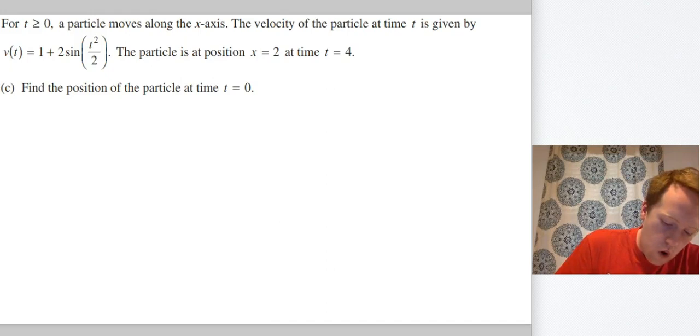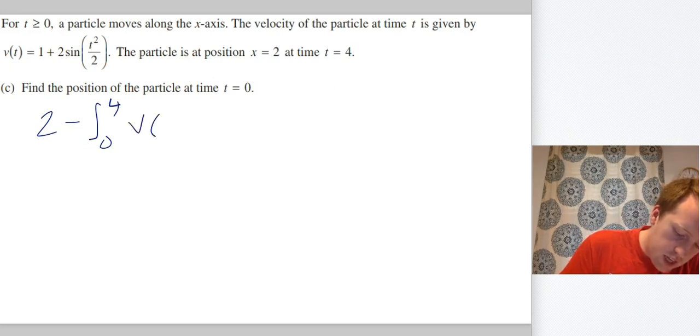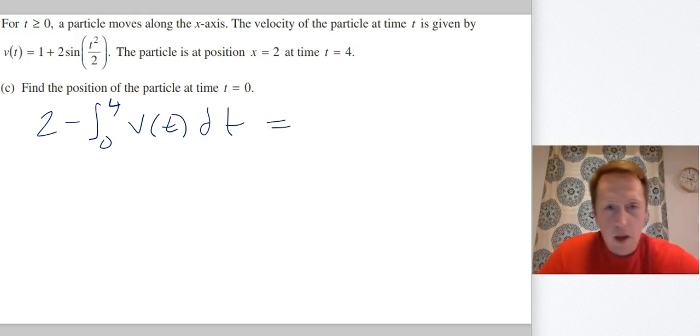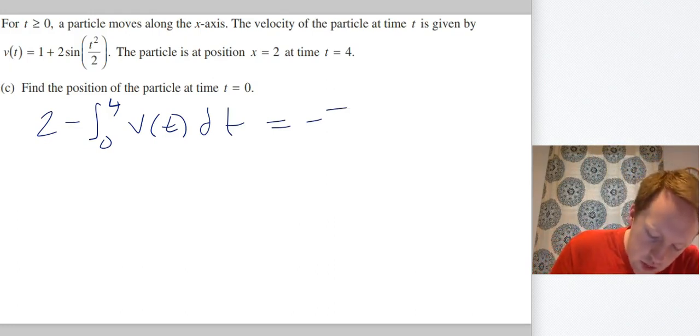So what I know is that at t = 4, the particle is at position 2. So it's 2 minus the integral, because I'm going to go back in time, from 0 to 4 of v(t) dt. Writing that on your paper gets you credit. Now I'm going to go into the calculator and get the actual answer, and I'm going to find out that it's -3.815.